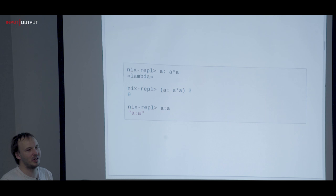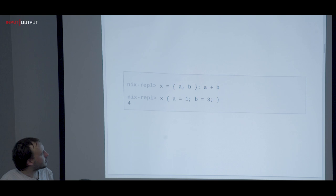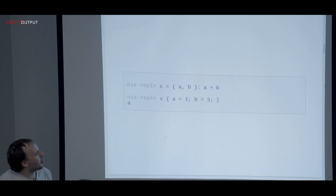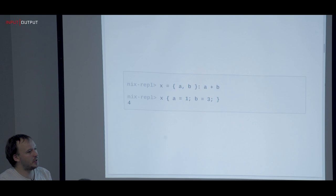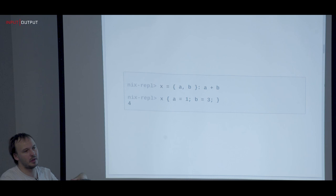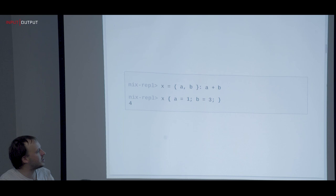These are things I would like Nix to clean up over time. The pattern matching on attribute sets basically means you can have attributes as function inputs — for example, a function that accepts A and B, uses the plus operator, and you pass A and B and get four out. This is the core of Nix where you pass packages and attribute sets in. The main type is attribute sets all the way — everything else is secondary.